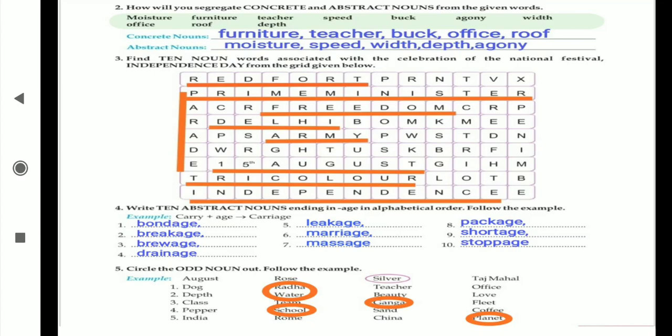Here in the help box, which are the words: moisture, furniture, teacher, speed, book, agony, width, office, roof, and depth. These words we are going to segregate between concrete noun and abstract noun. Concrete nouns: furniture, teacher, book, office, and roof.